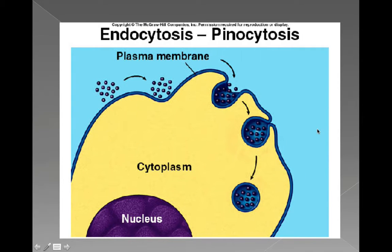Here's a depiction of pinocytosis. This liquid approaches the cell, and the cell membrane surrounds that pocket of liquid, forming a vesicle around it. Finally it pinches off, forming the vesicle, which then heads somewhere in the cell depending on what it is.